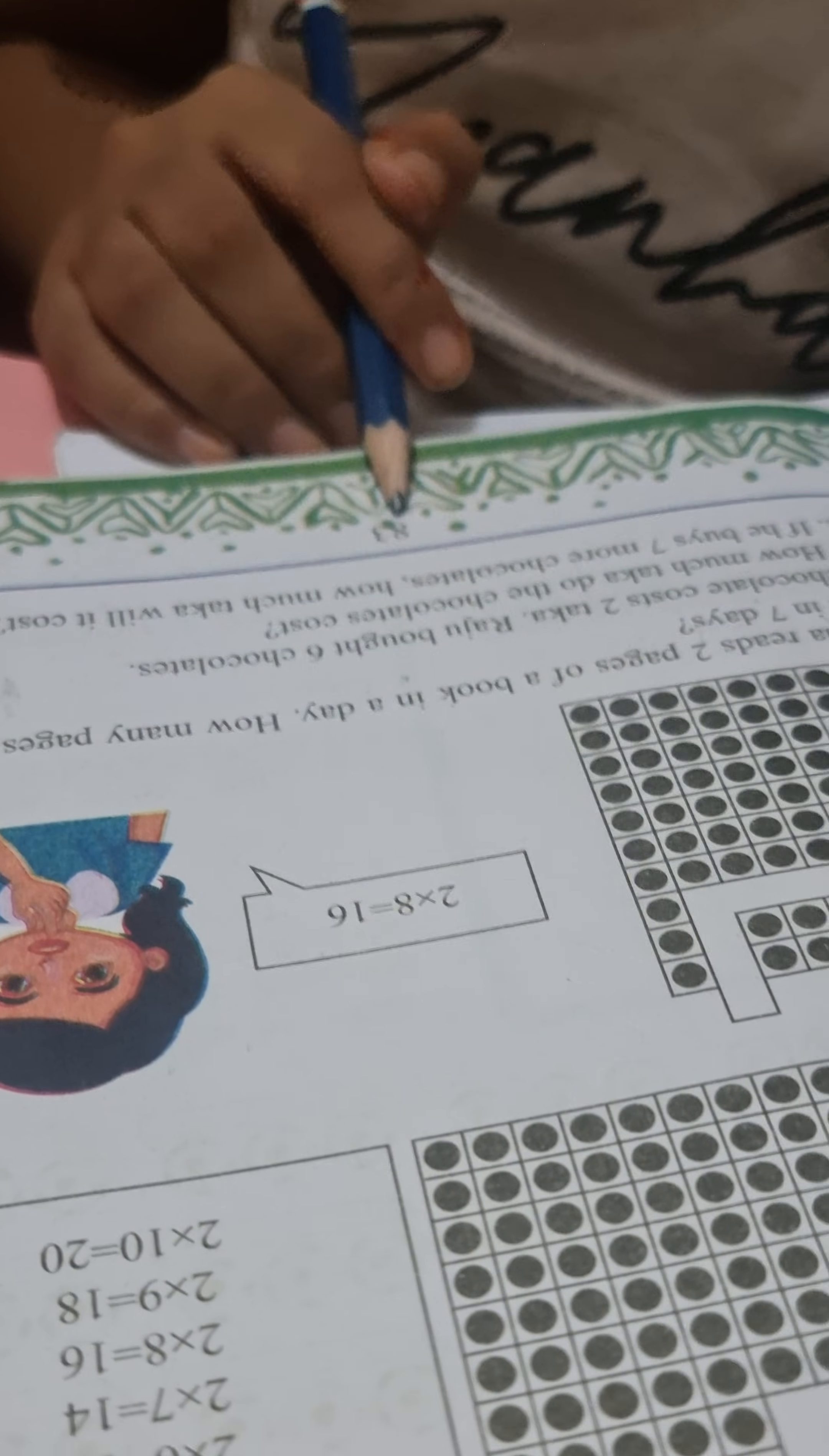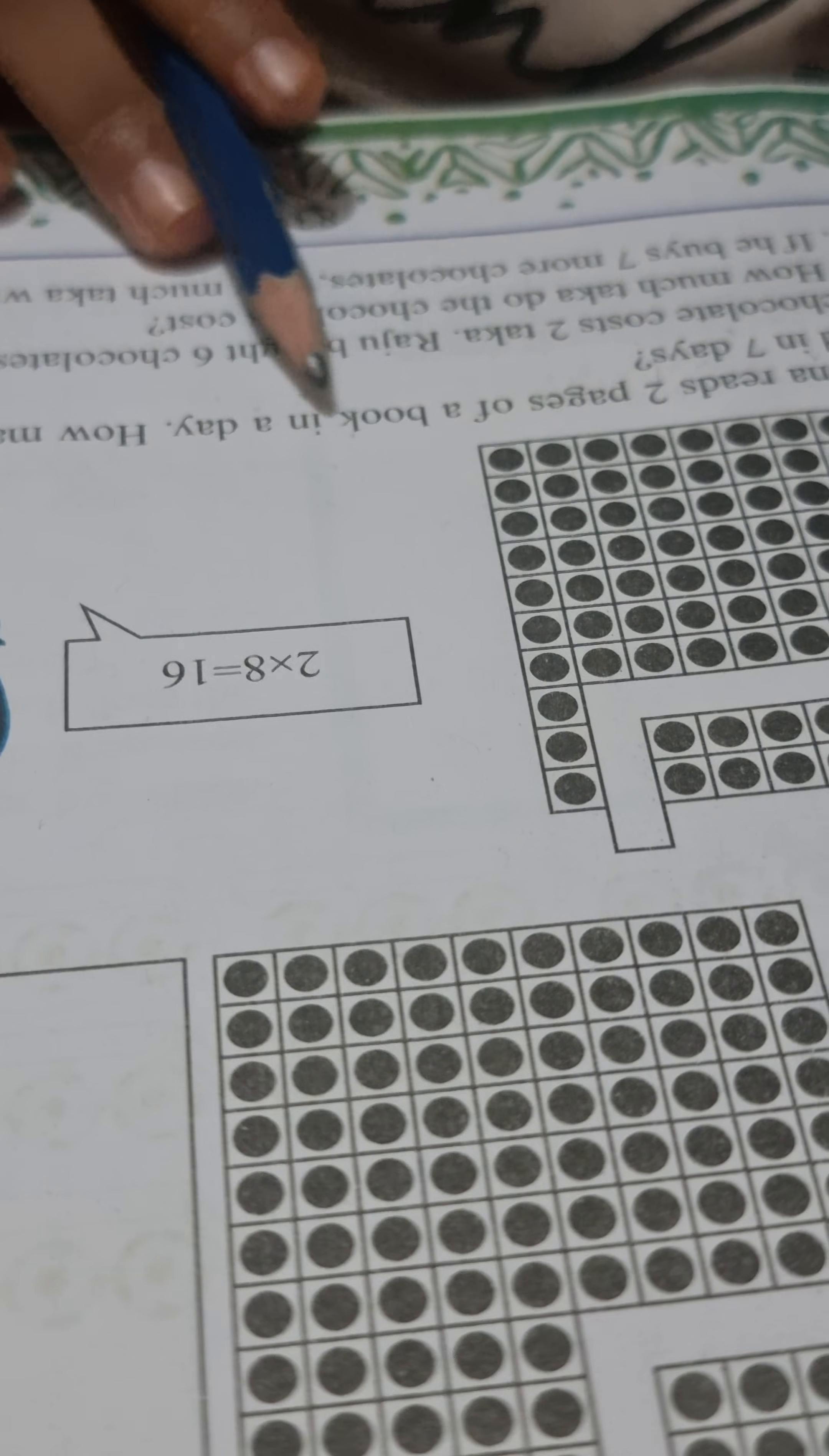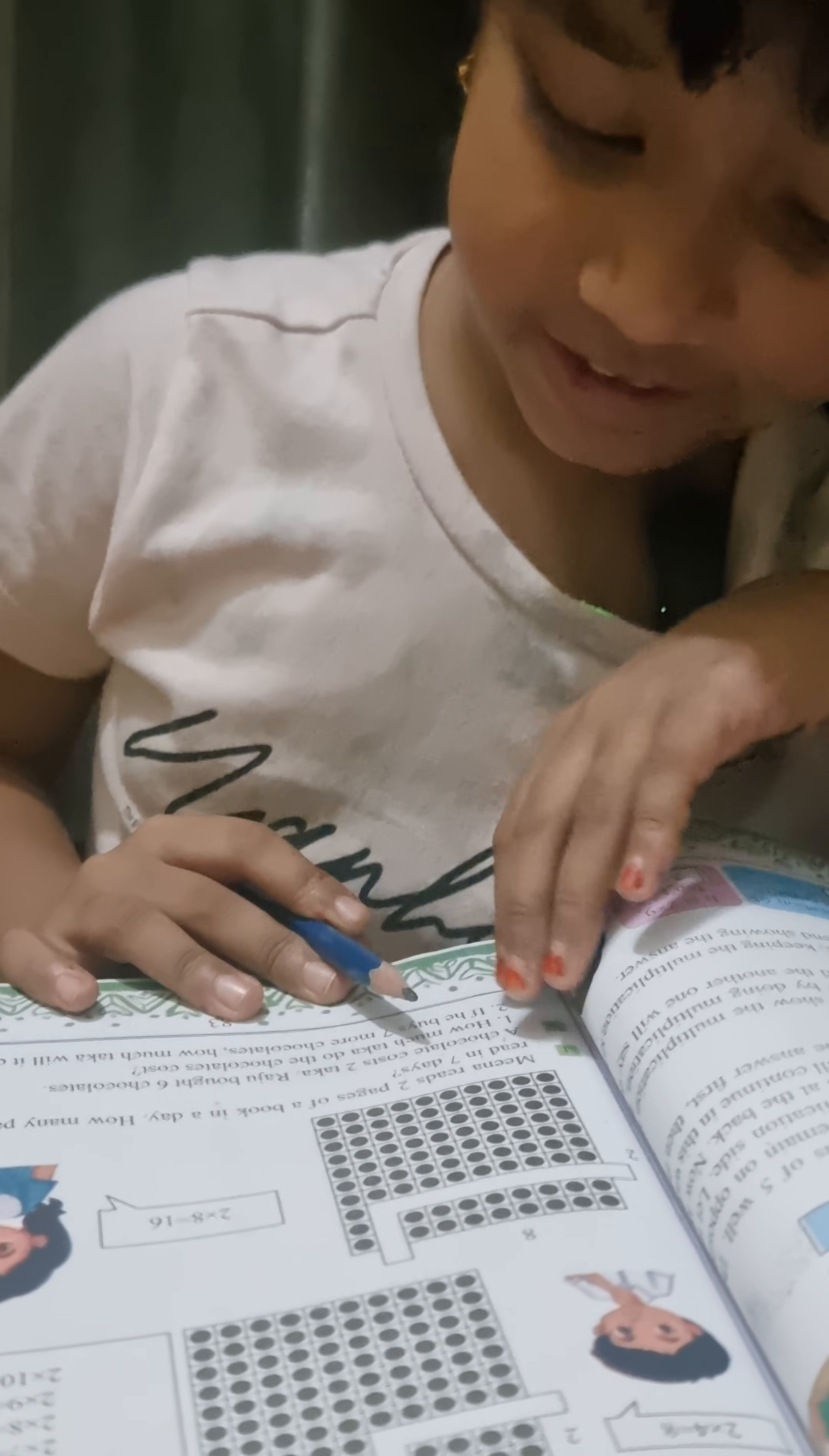Hello everyone, today I will tell you our math problem. So first number 83, yes page 83. We read the question: Nina reads two pages of a book in a day, how many pages will she read in seven days?